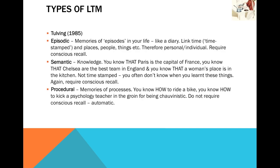The third type is procedural memory — memory of processes. This would be knowing how to ride a bike, putting one foot in front of the other. Knowing how to tie your shoelaces. Anything where it's a process is your procedural memory. These don't require conscious recall; you should just be able to do them. Think of David Beckham taking a free kick — he's probably not thinking 'how do I do this again?' If you were to jump on a bike, you shouldn't need to think about it; you just do it. So procedural memory doesn't require conscious recall.